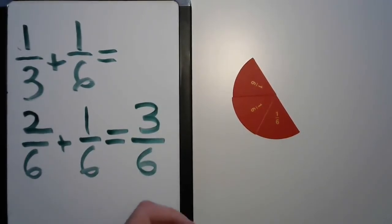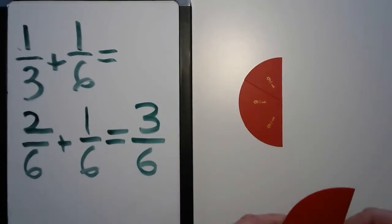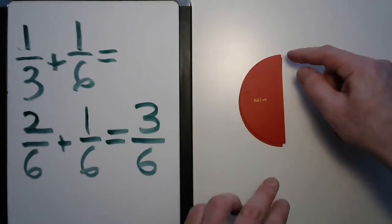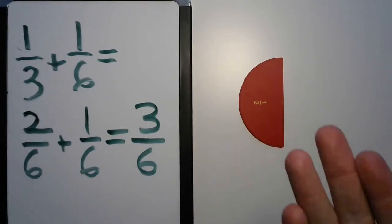But wait, we're not done yet. Did you notice that that shape looks very familiar? Maybe it looks a lot like this? One-half? That's because it's totally equivalent. So we can actually put our final answer down as one-half.